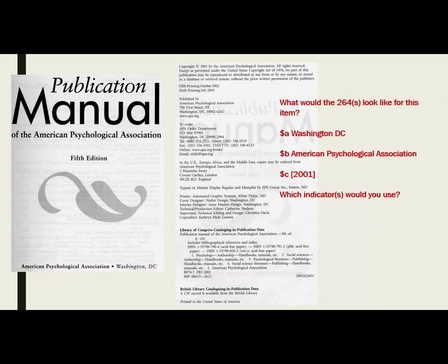If I were to use 2003, I would put that in subfield C in brackets because it's not a publication date. Would you use more than one indicator? One for the first 264 and four for the additional — that's correct. That's what I would do. You would only use that additional 264 if you used the copyright date in your C.